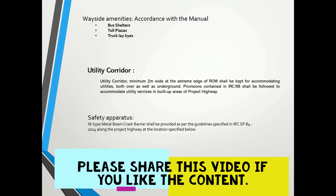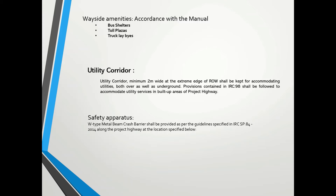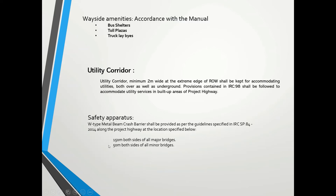Safety apparatus refers to crash barriers and vehicle restraint systems. We need to submit miscellaneous drawings for safety apparatus. Metal beam crash barriers are required for 150 meters on both sides of all major bridges, and 50 meters on both sides of all minor bridges. Also required where embankment height is greater than 3 meters, on sharp curves with radius less than 450 meters, and between the main carriageway and service road.